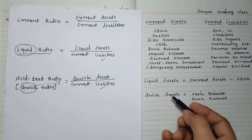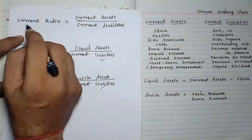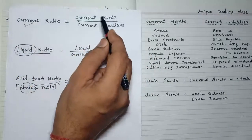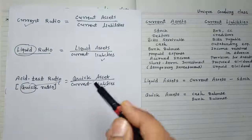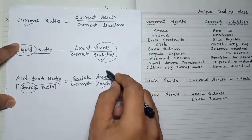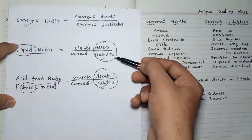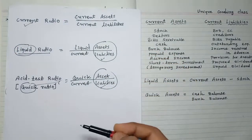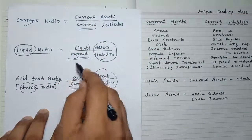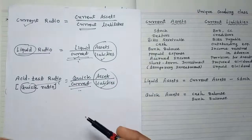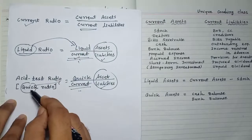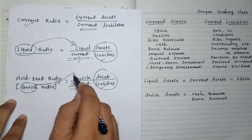To summarize the formulas: current ratio = current assets divided by current liabilities. Liquid ratio = liquid assets divided by current liabilities. Acid test ratio, also called quick ratio, = quick assets divided by current liabilities. Current liabilities is the common denominator in all three formulas.